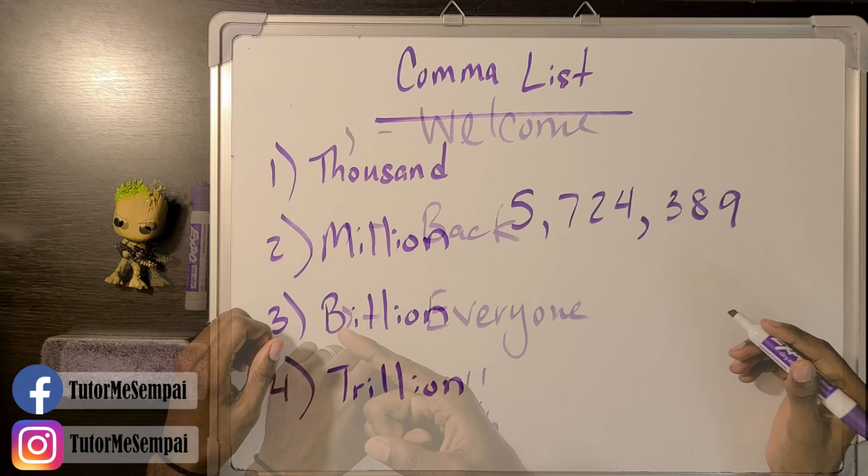In my previous video, we talked about reading large numbers, and one thing we talked about needing in order to do so was your common names. We covered thousand and million in our previous video, but there are so many more. Today we're going to cover the four most common names you're going to run into outside of school. You may not need all of these for fourth grade, but you will run into them in your everyday life.